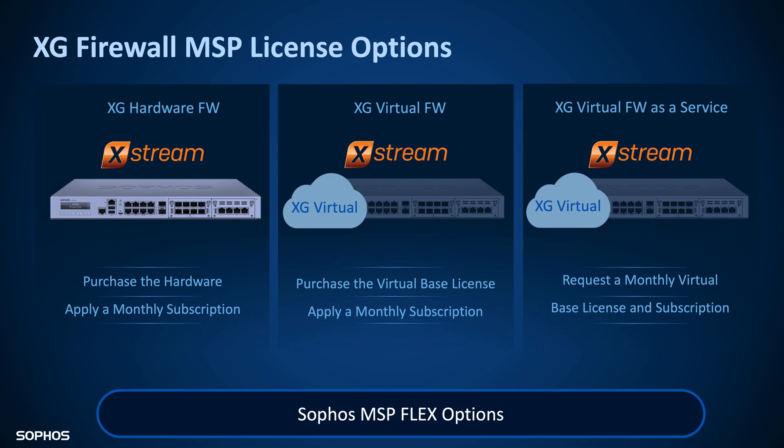The first option is your XG hardware — hardware purchased from Sophos. You need to purchase the hardware in advance and then you can apply a monthly subscription to that from the partner dashboard. The second option is your XG virtual firewall, which requires you to purchase the virtual base license ahead of time and then apply the monthly subscription.